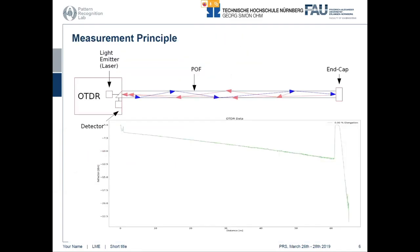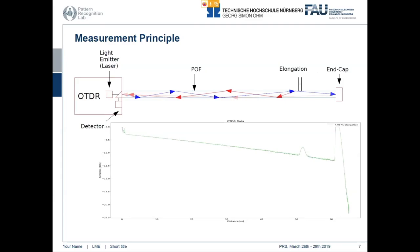So you get a nice measurement curve that starts and then has a constant backscatter until the end cap, where most of the light is reflected, as you can see in this nice steep peak. One nice property of those fibers is if you stretch it at any point, this locally increases the amount of light that is reflected. The effect is the Rayleigh backscatter, and this can be measured by this device. We use this to detect possible movements as early warnings.